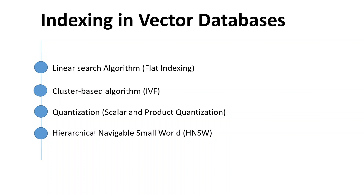For example, Chroma, a quite popular vector database, uses SQLite as an in-memory store, and PG Vector uses the Postgres database to store embeddings. The thing which differentiates a vector database from a traditional database is how indexing works. Indexing is also part and parcel of traditional databases, but the way it is done in vector databases is quite different. In this video, I am going to introduce and explain in very simple words what the indexing techniques in a vector database are.